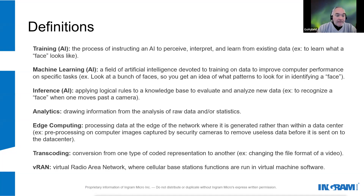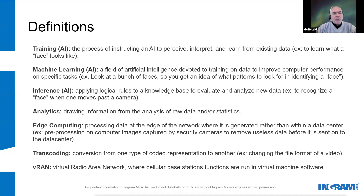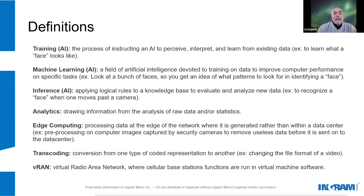Transcoding is conversion from one type of coded representation to another — for example, changing the format of a recorded video. And finally, VRAM. VRAM stands for virtualized Radio Access Network, where cellular base station functions are run in virtual machine software.